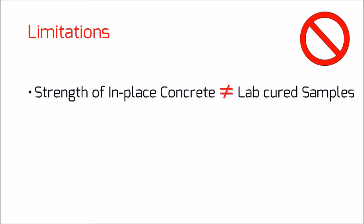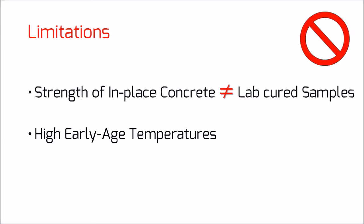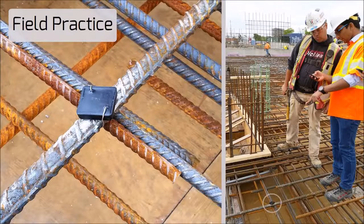While the maturity method provides an easy-to-use procedure to predict strength, it has certain limitations. The main obstacle is that cylindrical specimens used in the lab for developing the maturity-to-strength relationships may not be representative of the in-place concrete. This can be due to changes in materials, water-to-cement ratio, air content, batching method, and more. Another issue is dealing with high temperatures — when early age temperatures are very high, it can lead to inaccurate estimation of strength at later ages. A further challenge is determining a reliable datum temperature; using a datum temperature with the Nurse-Saul function that is not representative of the concrete mixture can result in incorrect strength estimation.